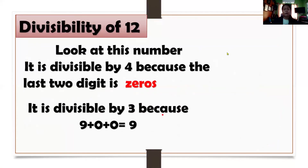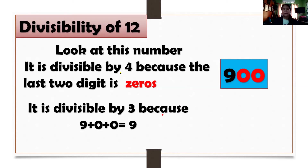Let us look at the example. We have 900. It is divisible by 4 because it ends in 2 zeros. Let us see if this is also divisible by 3. Let us add the digits: 9 plus 0 plus 0 equals 9. Is 9 divisible by 3? Yes. When we divide 9 by 3, the answer is 3. So 900 is divisible by 12.